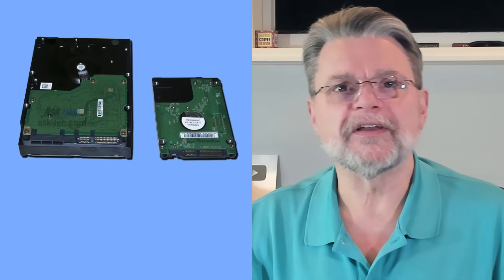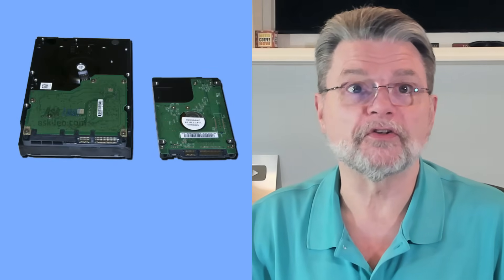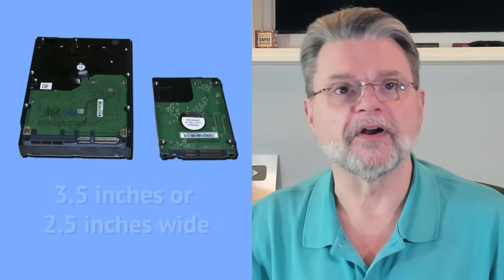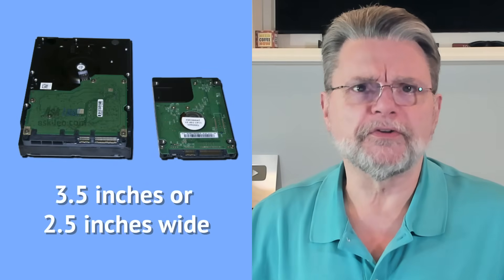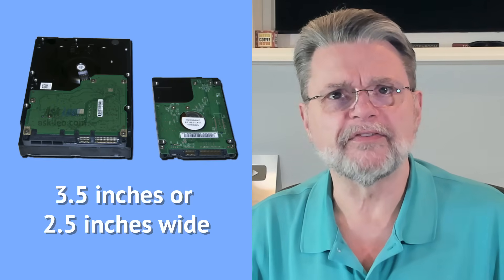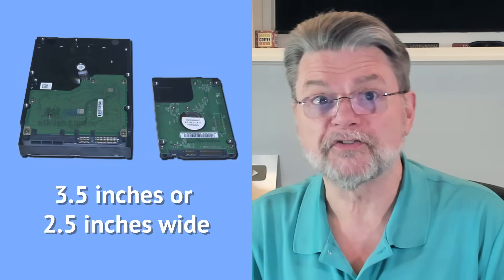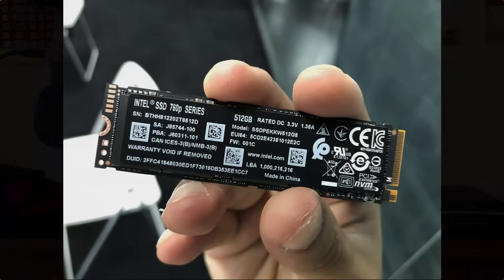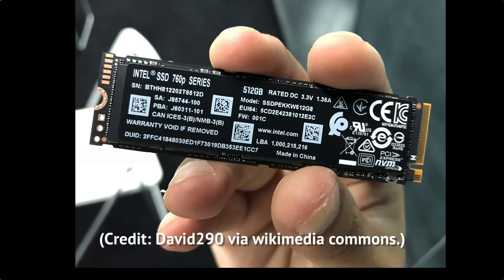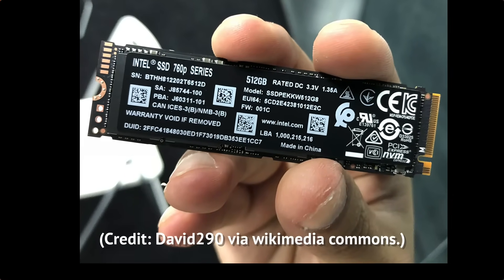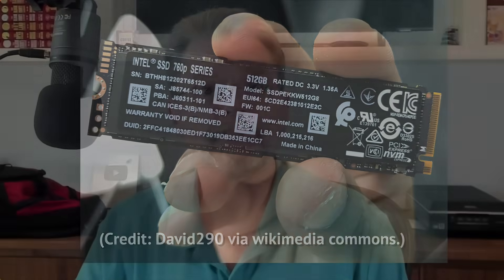You do need to get the correct size enclosure for the physical size of your drive. Current drives are either usually 3.5 or 2.5 inches wide, and the enclosure has to match. SSDs come in two form factors as well: one that is physically the same as the 2.5-inch traditional hard drive, and the newer M.2 format, which is smaller and faster. There are external enclosures for those as well.